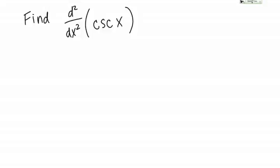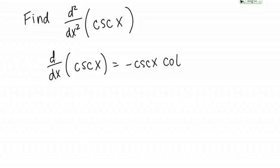Let's calculate the second derivative of cosecant X. The first derivative will be easy. We need to start by finding the first derivative, but that's just a basic formula that we know. The derivative of cosecant of X is negative cosecant X times cotangent X.